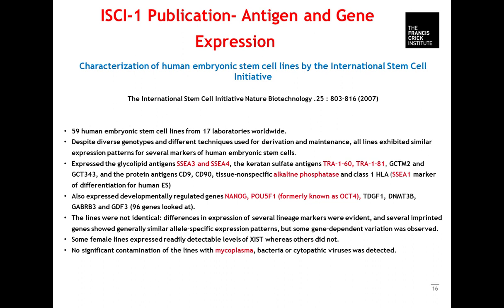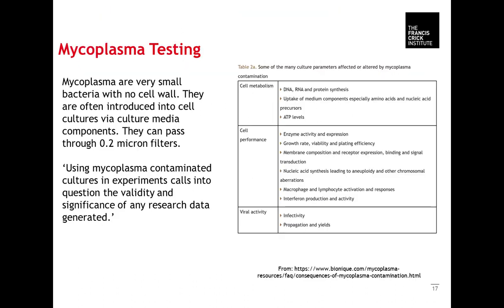Why is mycoplasma testing so important? Mycoplasmas are very small bacteria with no cell wall, often introduced into cell cultures via culture components, and they can pass through 0.2 micron filters. Using mycoplasma-contaminated cultures calls into question the validity and significance of any research generated. Mycoplasma can affect cell metabolism, cell performance, and viral activity and infectivity. It is one of the fundamental things you should always be doing — if you bring cells in from outside your laboratory, you don't know what you bring with them, so mycoplasma testing must always be of prime importance.